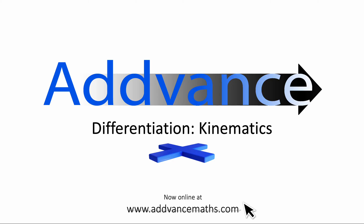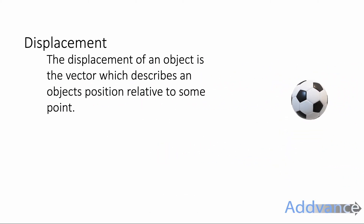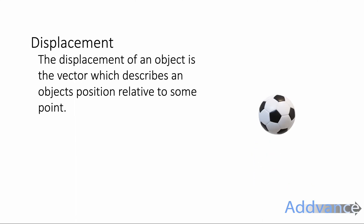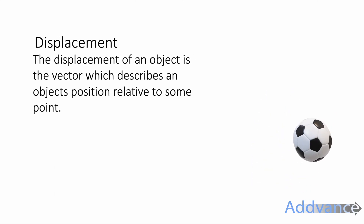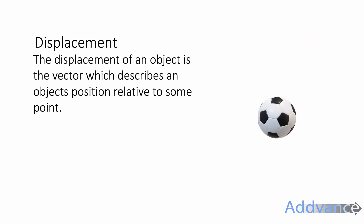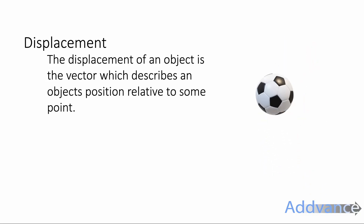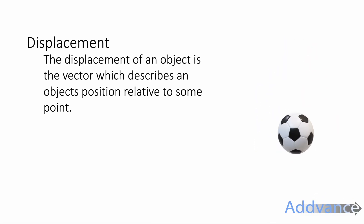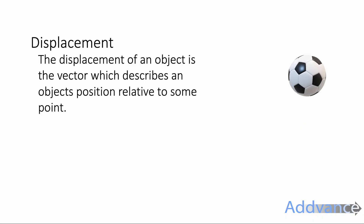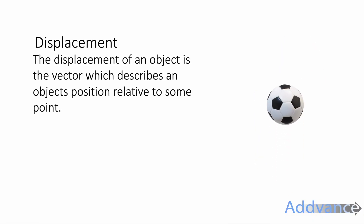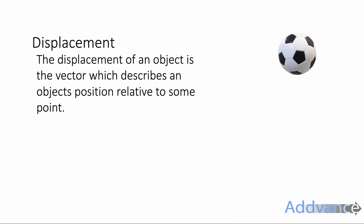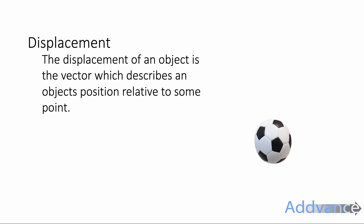Kinematics is about how things move, and so it's a really interesting application of differentiation. The displacement of an object is a key idea we need to know, and the displacement represents a vector which describes an object's position relative to some point. So you've got a football here which is moving, and at each point in time it's got a different position — it's got a different displacement.